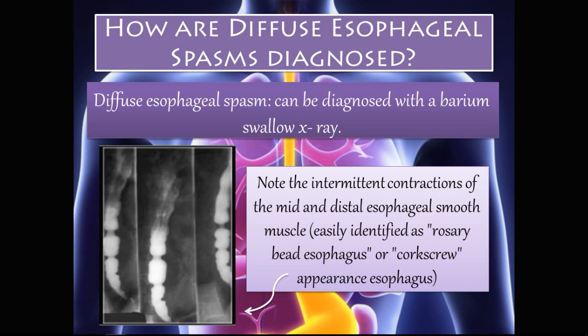Diffuse esophageal spasms can be diagnosed with a barium swallow x-ray, taken after the patient ingests a solution containing barium sulfate. The barium sulfate coats the esophagus making it radiopaque so we can view the inner anatomy. On this study we can note intermittent contractions of the mid and distal esophageal smooth muscle and identify the classic rosary bead or corkscrew appearance.